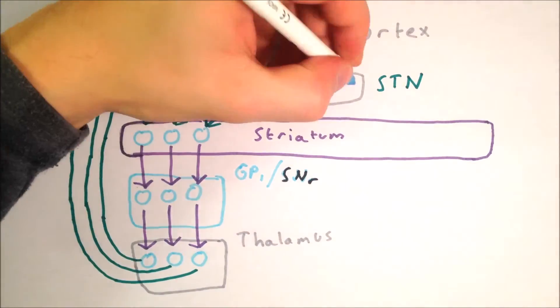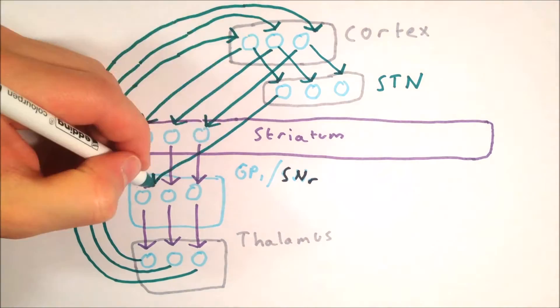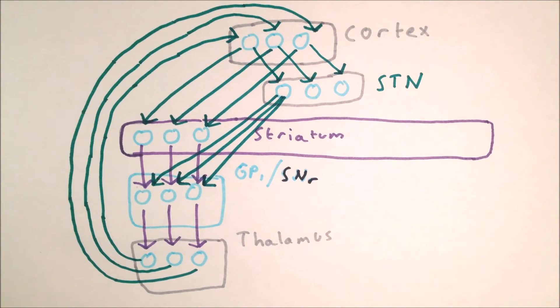The inputs from the cortex also excite neurons in the subthalamic nucleus, which excite the inhibitory neurons of other loops in the globus pallidus interna and substantia nigra pars reticularis. In this way, each loop projects an input into the striatum, which acts to inhibit its corresponding inhibitory output neurons, and also projects an input to the subthalamic nucleus, which acts to excite the inhibitory output neurons of other loops.